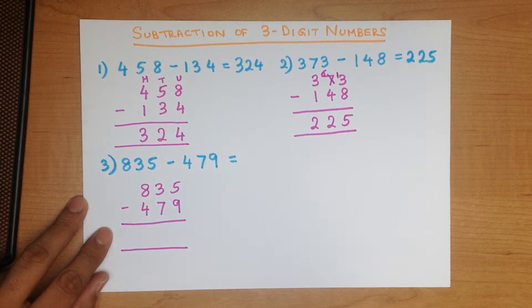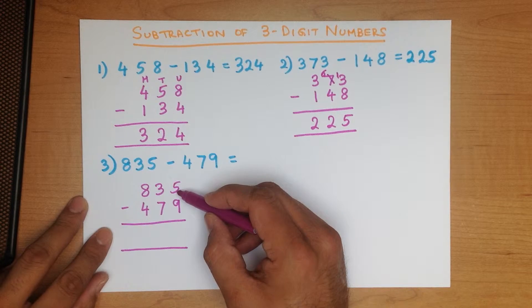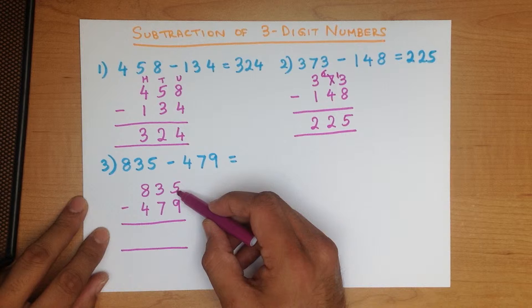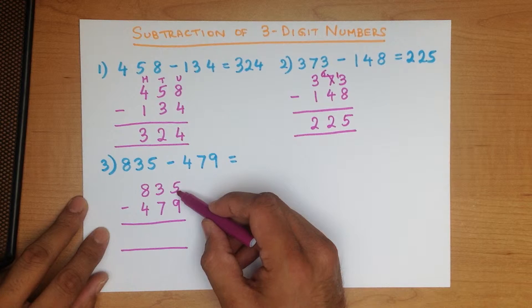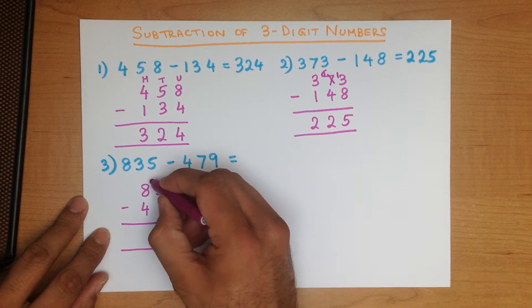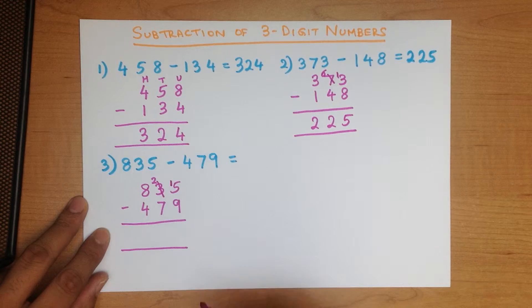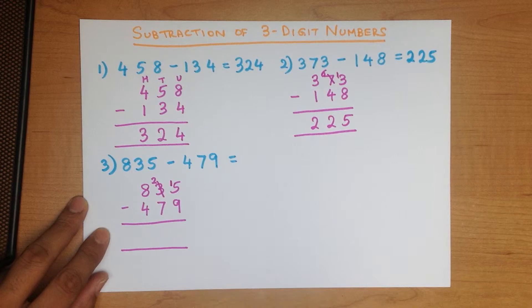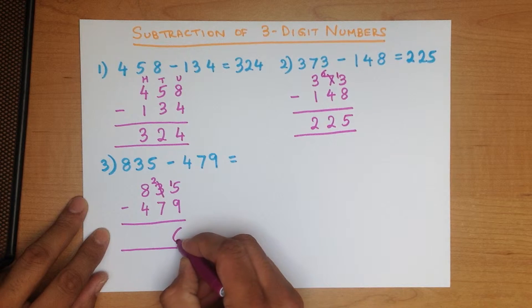The first step, we subtract the column on the right-hand side: 5 minus 9. Well, 5 is smaller than 9, so we can't do this. We have to take a 10 from the tens column, so the 3 becomes a 2. The 10 we've taken we write in the units column — this now becomes 15 minus 9. That's right, it is 6.